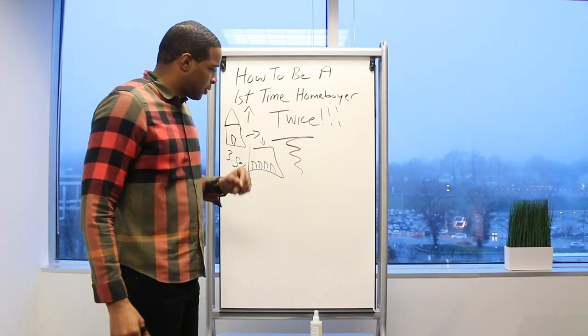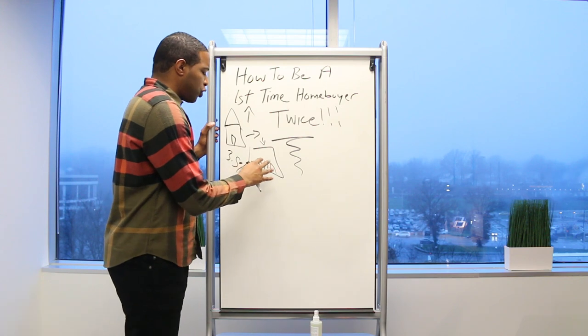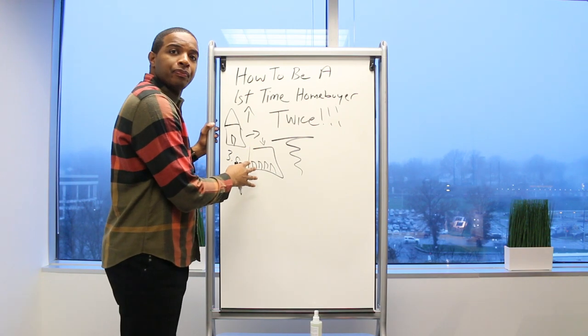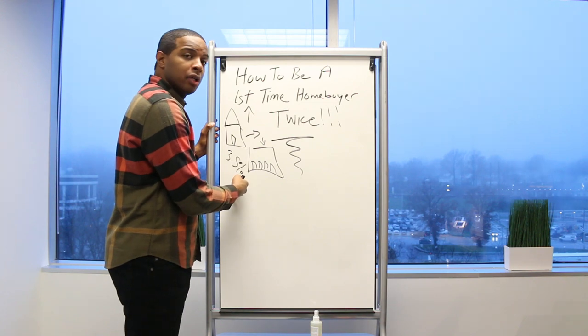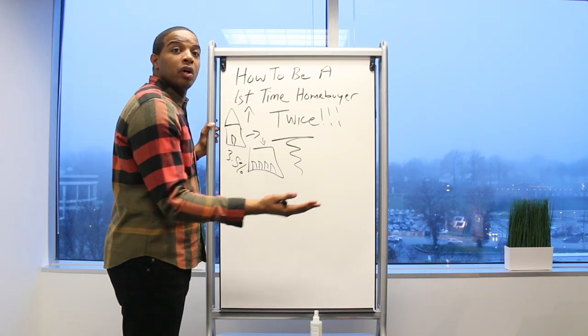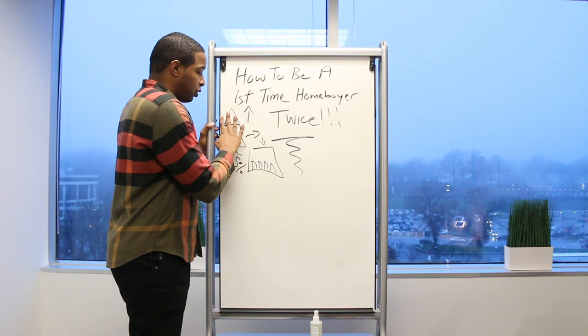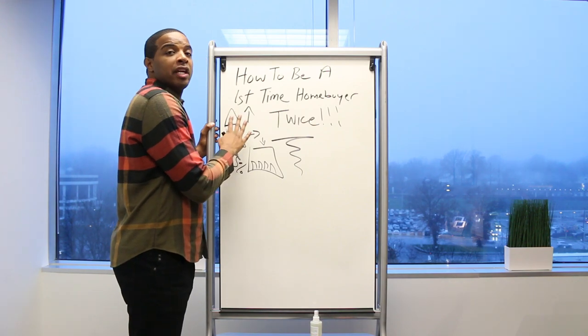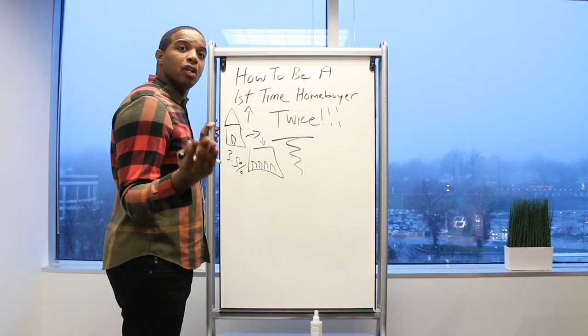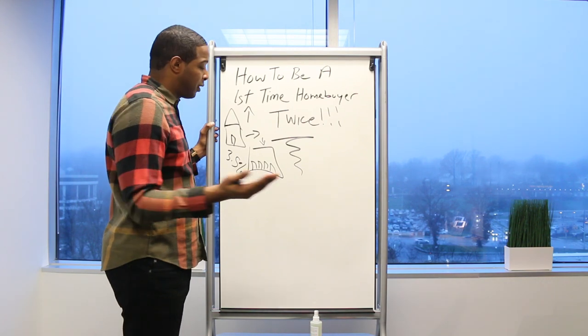It's like two or three things. Once you purchase one of these properties at three and a half percent down, once you sell one of these properties, say you bought a single family and two years later you sold it.